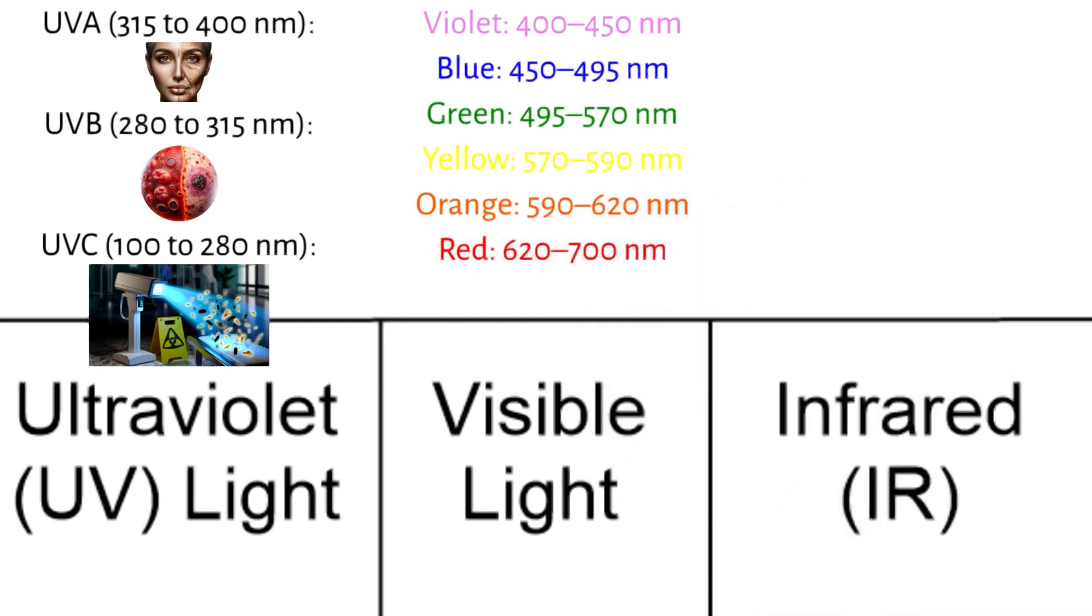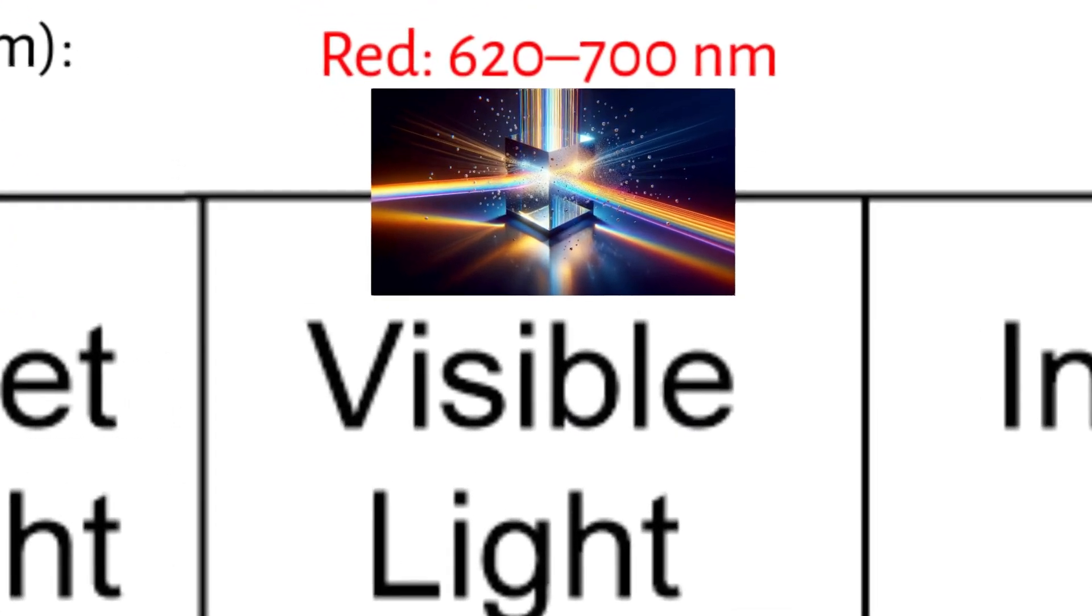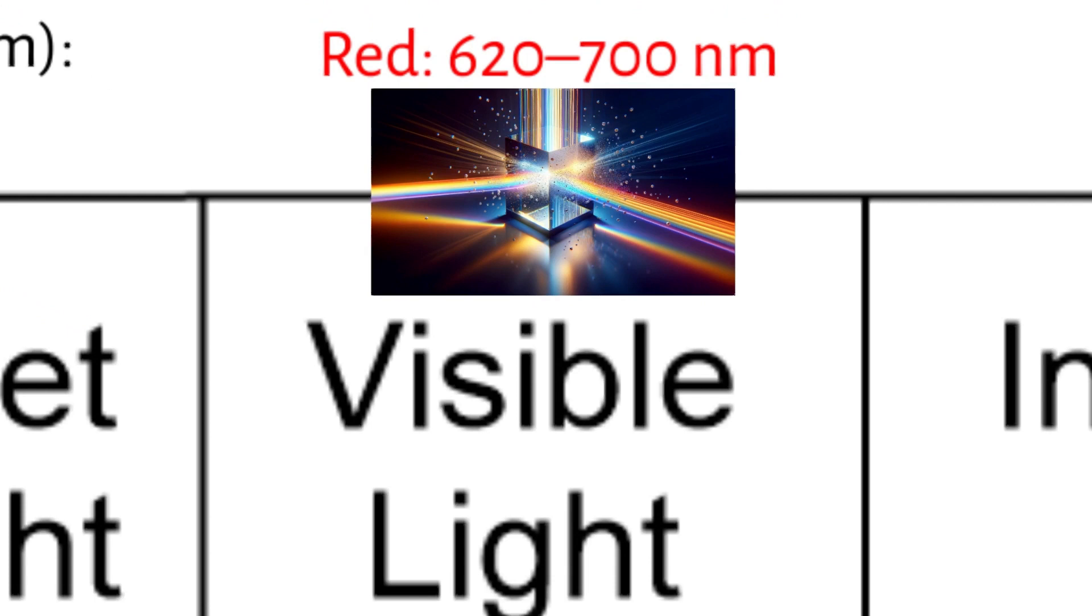These colors blend smoothly into one another, and the boundaries between them are not precisely defined and can vary depending on the source. Visible light makes up a very small part of the EM spectrum and is emitted by sources like the sun, light bulbs, and screens.